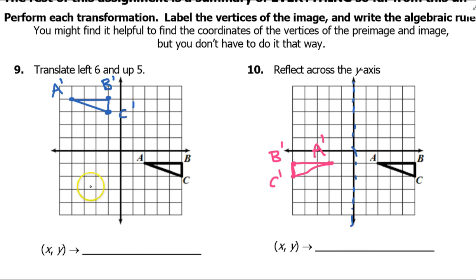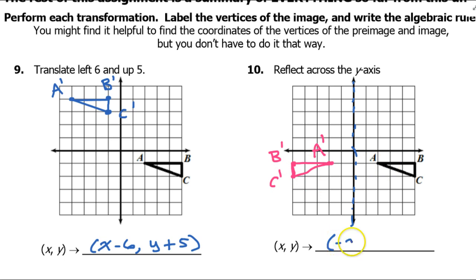I almost forgot about the rules. Back on problem number 9, we went left 6 and up 5, so that means x minus 6 for the left 6, and y plus 5 for the up 5. When you reflect across the y-axis, the x-coordinate changes signs, so this will become negative x. The y-coordinate does not change — look at point A: the y-coordinate is negative 1, and A prime still has y-coordinate negative 1. So the y-coordinate doesn't change, but the x-coordinate does.